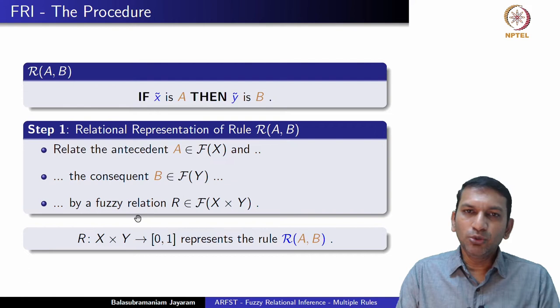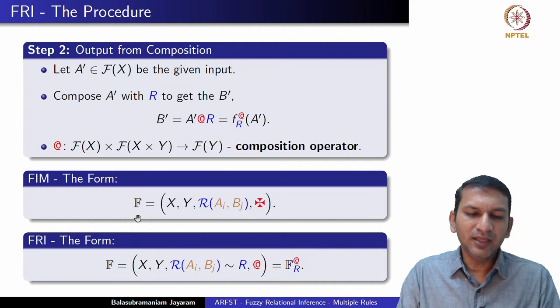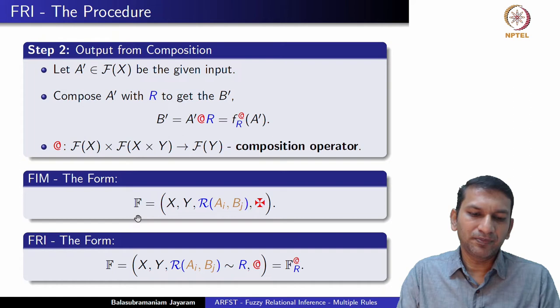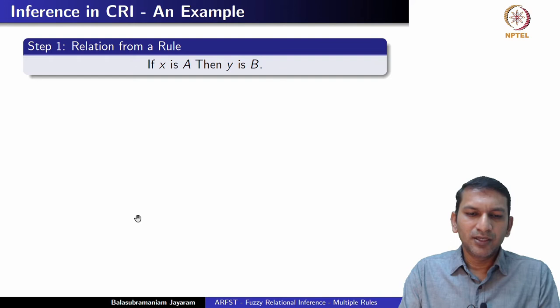A quick recap of the mechanism itself. It is a two-step procedure. We begin by representing the rule as a fuzzy relation which relates the antecedent — a fuzzy set on X — to the consequent — a fuzzy set on Y — captured as a fuzzy relation on X cross Y. In the next step, given an input A′, we compose the input with the relation that represents the rule to obtain an output. We revisit one particular illustrative example and then move on from there.